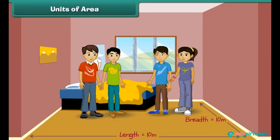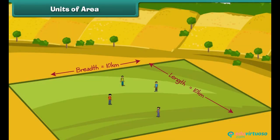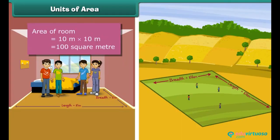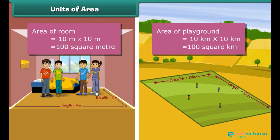How many children can stand in a square room of side 10 meters? And how many children can stand in a square playground of side 10 kilometers? More children can be adjusted comfortably in the playground. The area of the room is 100 square meters, while the area of the playground is 100 square kilometers. Thus, square kilometer is a bigger unit for measuring area than square meter.